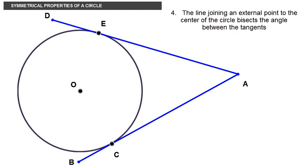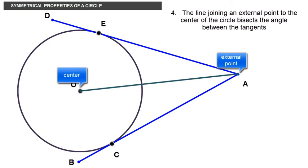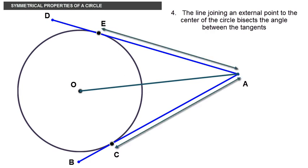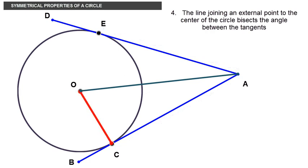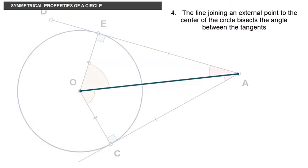The fourth property is an extension of the third and states that the line joining the external point to the center of the circle bisects the angle between the tangents. From the third property we have learned that AE and AC are equal. With that and OC and OE being the radius hence also equal, the triangles AOE and AOC are thus similar.